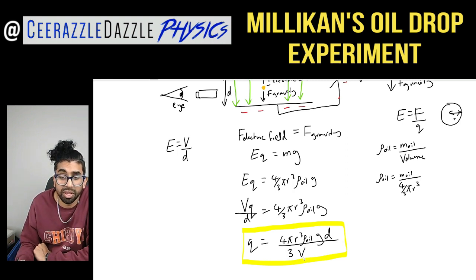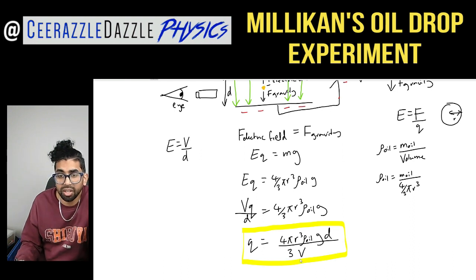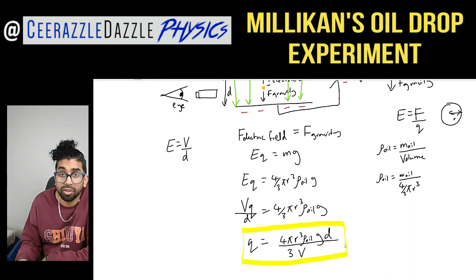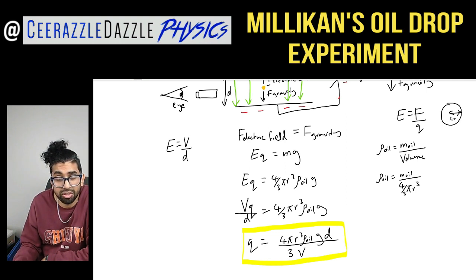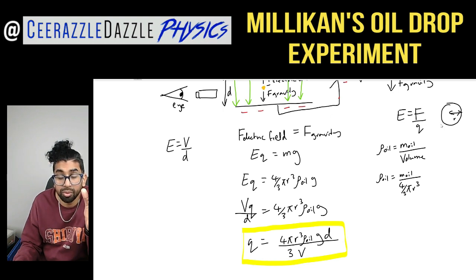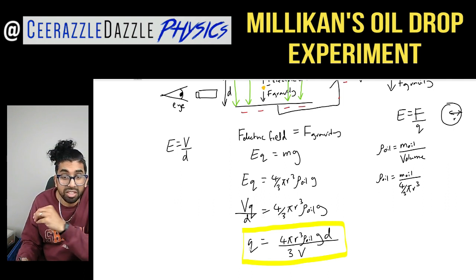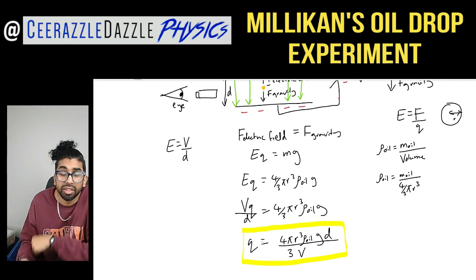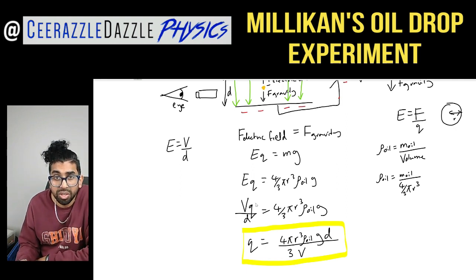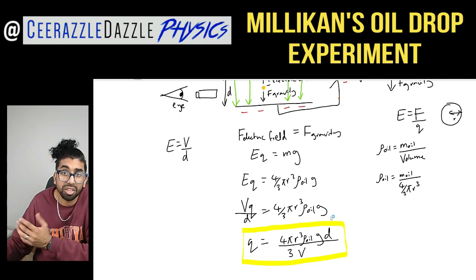You might think this gives us the electron charge directly, but we're not quite there yet. It's actually very hard to measure the radius of the oil drop — think about it, it's a tiny oil drop. So we need to do another experiment to calculate r, and then plug that value of r into this equation to get the charge. How can we determine the radius of the ball? It's a very similar experiment.